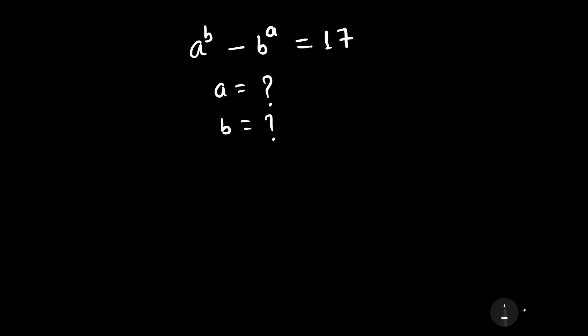Welcome to our YouTube channel Saval Bawal. Our question is: a to the power b minus b to the power a is equal to 17. We have to find the value of a and the value of b.